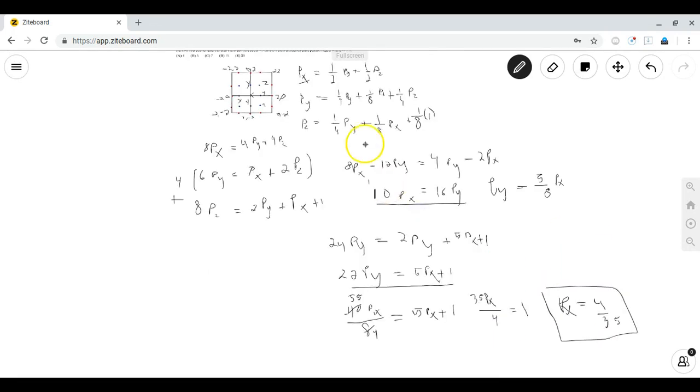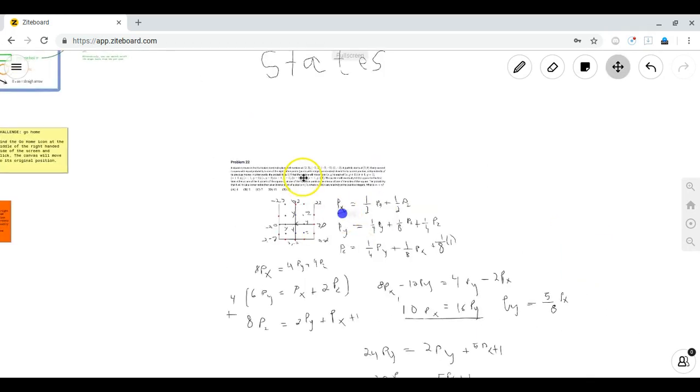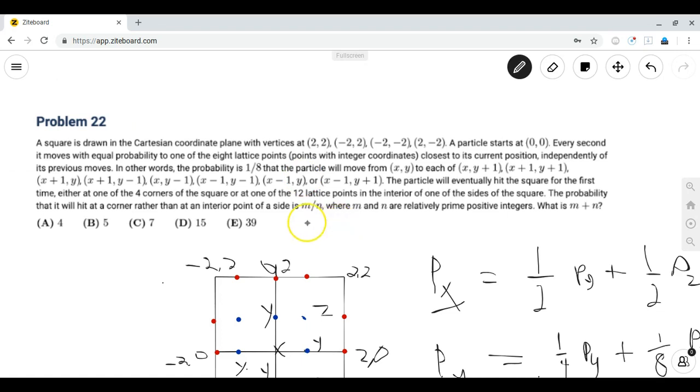Now we go back to the problem. The problem asks for... the problem says that the probability is m over n, so we want to find m plus n. And since P(X) is equal to four over 35, and four is relatively prime to 35, the answer is just four plus 35, or 39. And we're done.